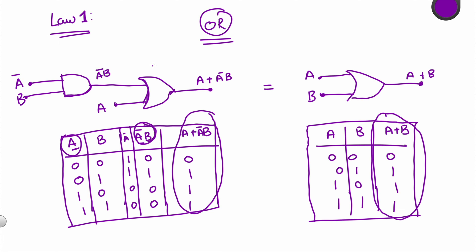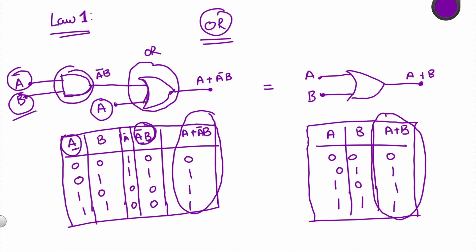So this is the first law of the Redundant Literal Rule. It says that the ORing of a variable with the AND of the complement of that variable with another variable is the same as ORing that variable with that other variable. Now let's take a look at the second law, which is very much similar but uses AND instead of OR.